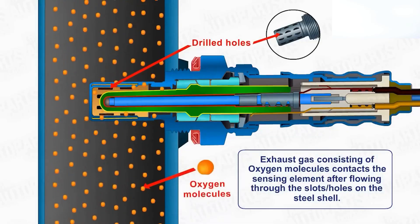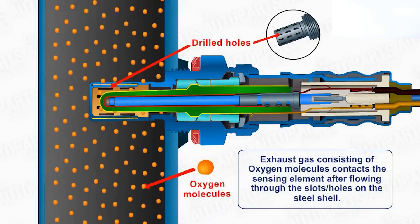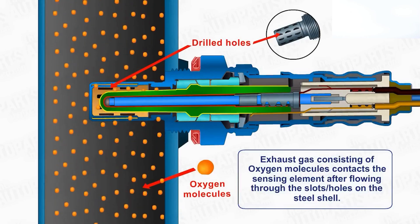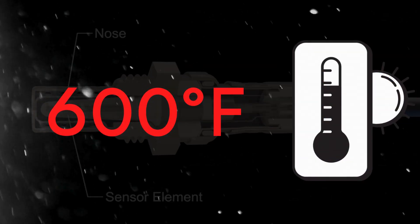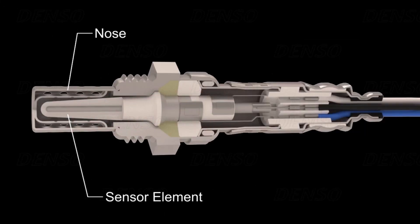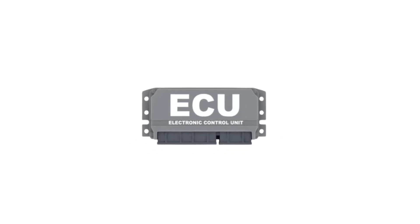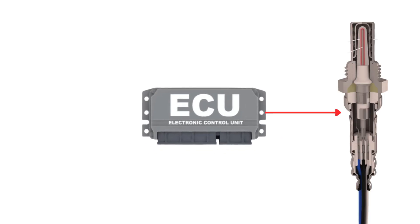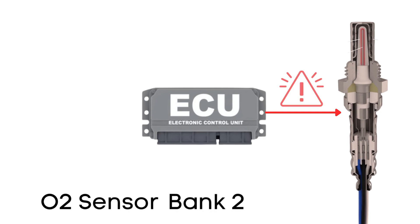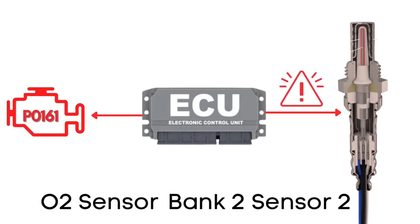An oxygen sensor won't function correctly until it's heated to a certain temperature — around 600 degrees Fahrenheit for conventional sensors. That's where the heater circuit comes in. It's designed to warm up the sensor quickly so it starts working sooner. The ECU regularly checks this heater circuit to make sure it's functioning properly. If the ECU detects a problem with the heater circuit in the oxygen sensor on bank 2, sensor 2, it triggers the P0161 code.